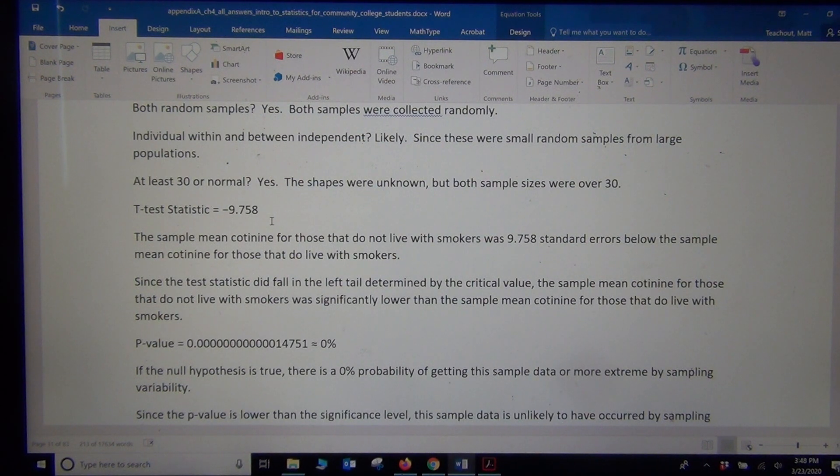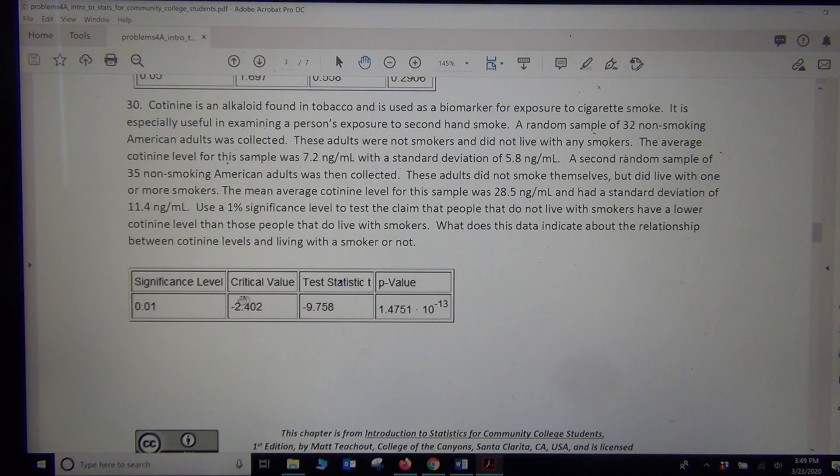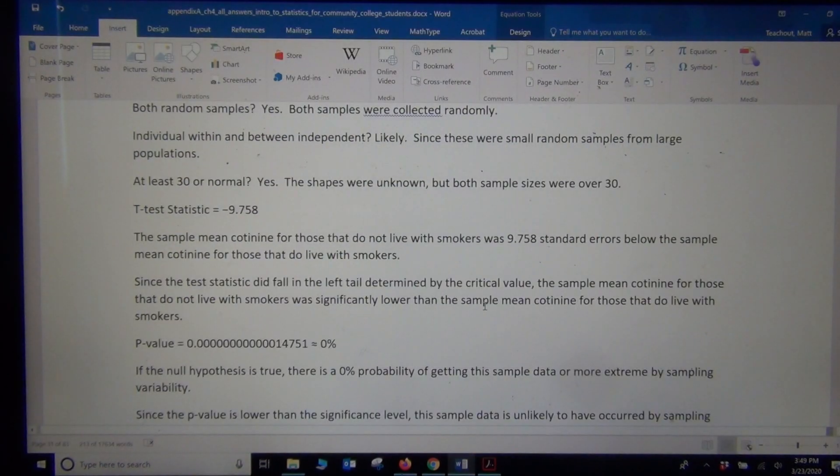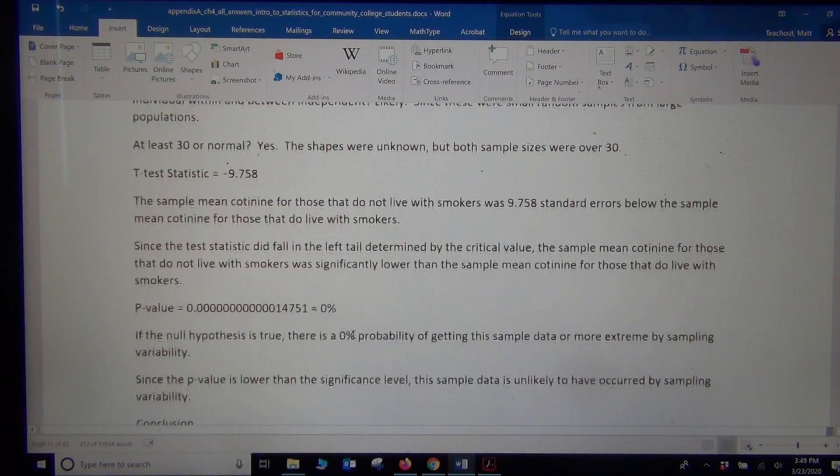Definitely going to fall in the tail determined by the critical value. What was the critical value again? Let's take a look. The critical value was negative 2.4. So even like negative 3, negative 4 would have been significant. Negative 9 is way significant. Really in the left tail. So definitely the sample data significantly disagrees with the null hypothesis.